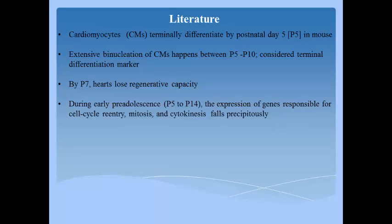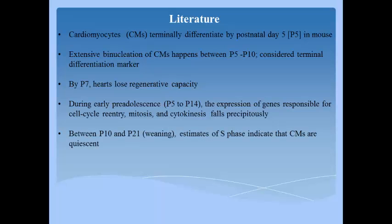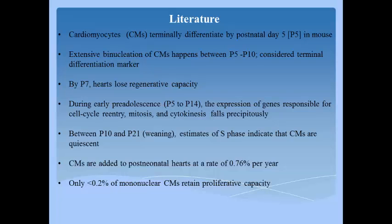During early pre-adolescence, that is P5 to P14, the expression of genes responsible for cell cycle entry, mitosis and cytokinesis falls precipitously. Between P10 and P21, the weaning period, estimates of S phase indicate that cardiomyocytes are quiescent. Cardiomyocytes are added to post-neonatal hearts at a rate of 0.76% per year, and only 0.2% of mononuclear cardiomyocytes retain proliferative capacity.